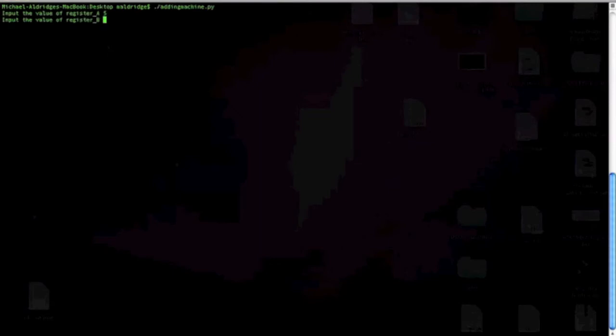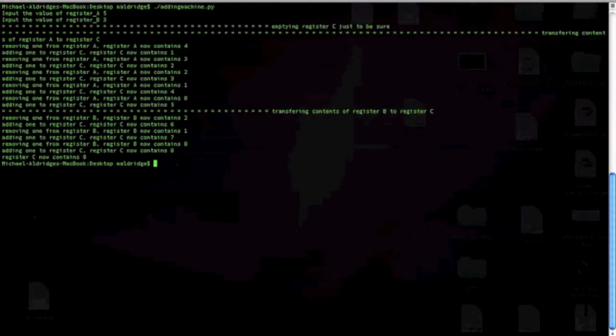For register A, we'll use a value of 5, and for B, a value of 3. The register machine then shows us its actions step by step. First, it empties register C just to be sure in case there was a value left from the last time the program ran. Then, it transfers the contents of register A to register C. It does this by subtracting a value from A, then adding a value to register C. It repeats this until register A contains 0. The process is then repeated for register B. Finally, the program echoes the register value for C. In this case, 5 plus 3 equaled 8.